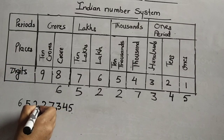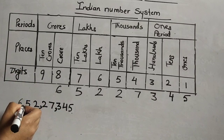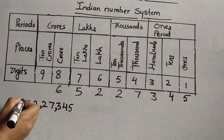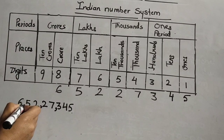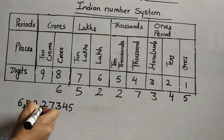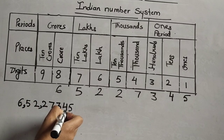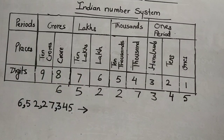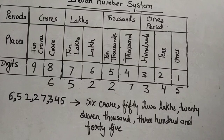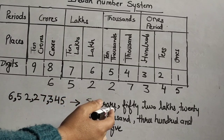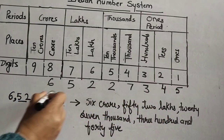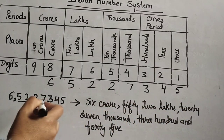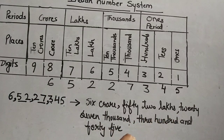So we write the ones period, thousands period, lakh and ten lakh, and crore. We write it as: 6,52,27,345. We read it as: six crore, fifty-two lakhs, twenty-seven thousand, three hundred and forty-five.